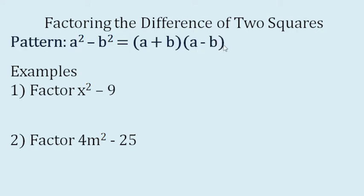Where are the two terms coming from? They are just actually the square roots of the first perfect square, a squared, and the second perfect square, b squared. Now let's do example number one.